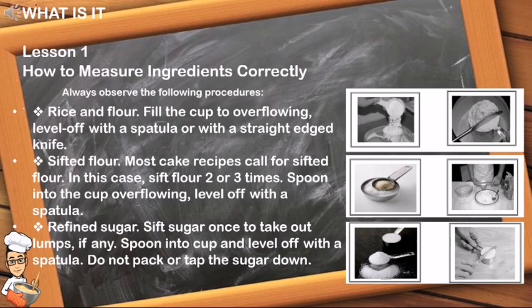Always observe the following procedures. Rice and flour: fill the cup to overflowing, level off with a spatula or straight-edged knife. Sifted flour: most cake recipes call for sifted flour; sift flour two or three times, spoon into the cup overflowing, then level off with a spatula. Refined sugar or sifted sugar: sift to take out any lumps, spoon into cup, and level off with a spatula.